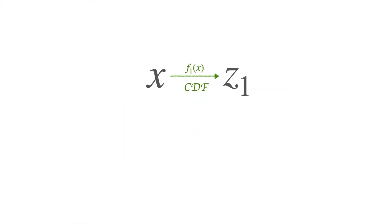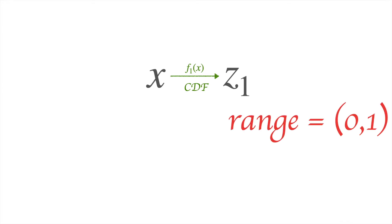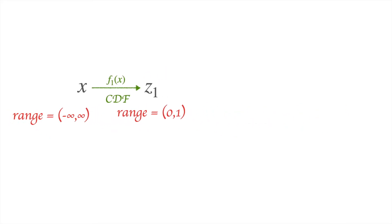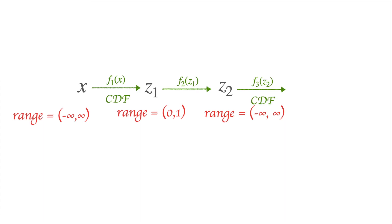If we have a variable X and we use a CDF to transform it into Z1, then Z1 will lie in the range 0 to 1, whereas X can be anything on the real number line. So what we would like to do is use another function F2 which maps Z1 back to the entire real number line, and then we can apply another CDF which maps it back to [0,1], and so on.